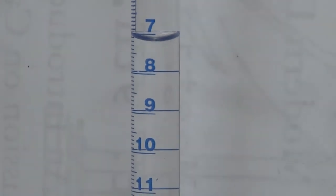That looks like 7.2, and that meniscus is right on the line, so I'm going to call that seven point two zero milliliters. So our starting volume of sodium hydroxide is seven point two zero milliliters.